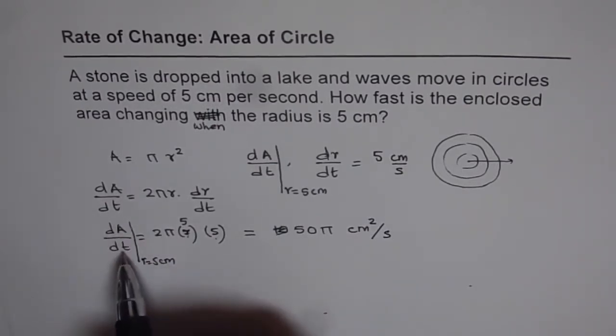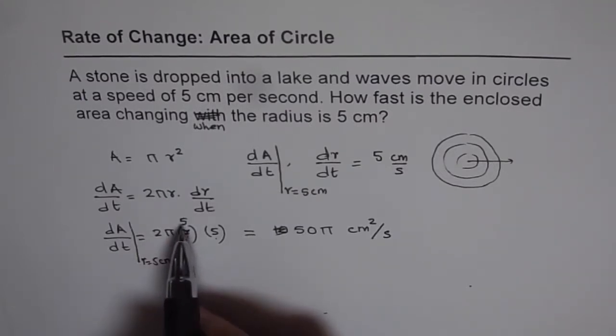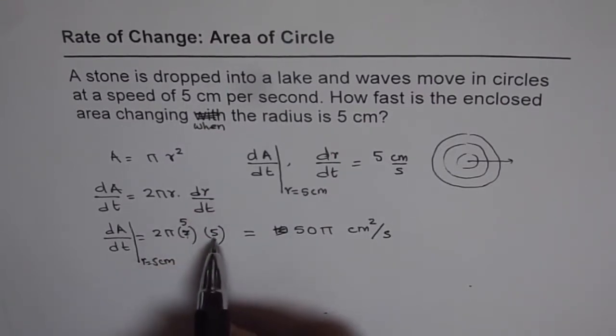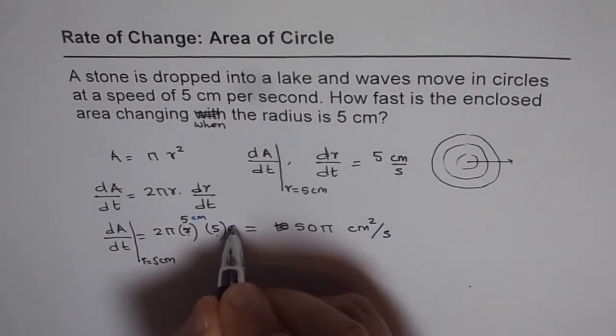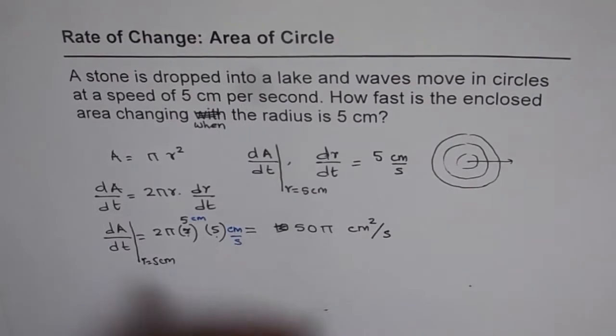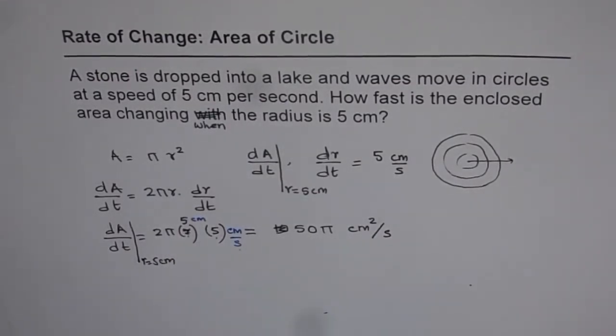So dA/dt when r equals 5 cm is 2π times 5 cm times dr/dt which is 5 cm per second. Let me include units here. So here the unit is centimeter and here it is centimeter per second. So we get centimeter square per second as our answer.